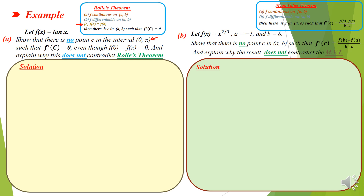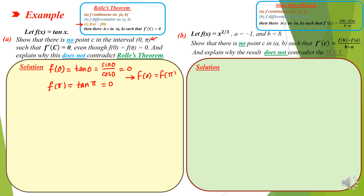One condition of Rolle's Theorem requires that f(a) equals f(b). Evaluating: f(0) = tan(0) = sin(0)/cos(0) = 0, and f(π) = tan(π) = 0 as well. So f(0) = f(π), as the question states. However, this condition alone is not enough to conclude there exists a C making the derivative equal to 0.